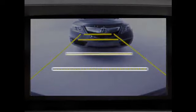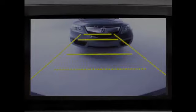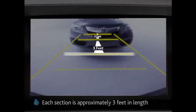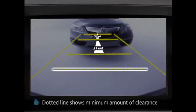Guidelines help the driver when backing into spaces and are divided into four sections to assist with distance. Starting from the second line back, each section is approximately 3 feet in length, with the dotted line showing the minimum amount of clearance the tailgate needs to be open.